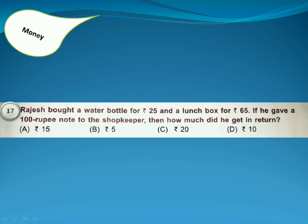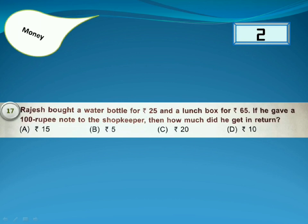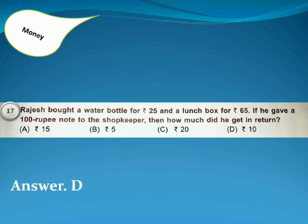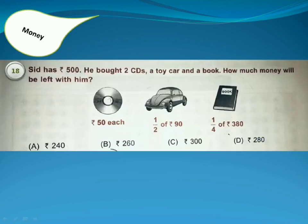Rajesh bought a water bottle for 25 rupees and a lunch box for 65 rupees. If he gave a 100 rupee note to the shopkeeper, then how much did he get in return? Answer is Option D. Total cost will be 25 plus 65, that is 90, and 100 minus 90 is 10.